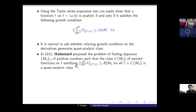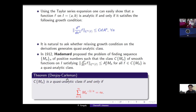In 1912, Hadamard proposed the problem of finding sequences of positive numbers such that the class C(M_n), defined as the set of all smooth functions for which the L-infinity norm of the n-th derivative is controlled by A to the power n times the sequence m_n, is quasi-analytic. In 1921, Denjoy gave a partial answer, and later in 1926, Carleman completed it. This question is now completely answered by the Denjoy-Carleman theorem, which states that the class C(M_n) is quasi-analytic if and only if the series with n-th term m_n to the power minus 1 over n is divergent.